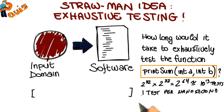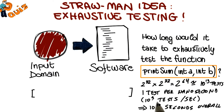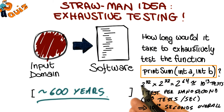Now let's assume that we can run one test per nanosecond. That means we can run 10 to the 9th tests per second, and that's a lot. If we do the math, that results in 10 to the 10 seconds overall — because we have 10 to the 19 tests and we can run 10 to the 9th tests per second. So we can run all these tests in 10 to the 10th seconds, which corresponds to about 600 years.